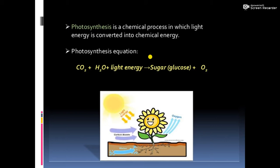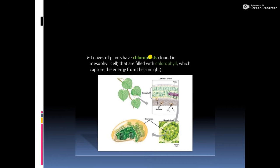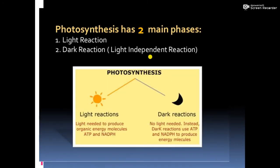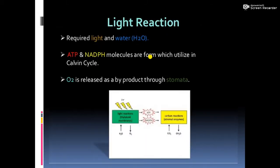Before starting, let's revise the previous class where we discussed the first stage of photosynthesis. Photosynthesis is a chemical process in which light energy is converted into chemical energy. The equation is: carbon dioxide plus water, with the help of light energy and chlorophyll, makes glucose and releases oxygen. Leaves are filled with chloroplasts containing chlorophyll. Photosynthesis has two main phases: the light reaction and the light independent reaction. In the light reaction, light and water are required, ATP and NADPH are formed, and oxygen is released as a byproduct through stomata.